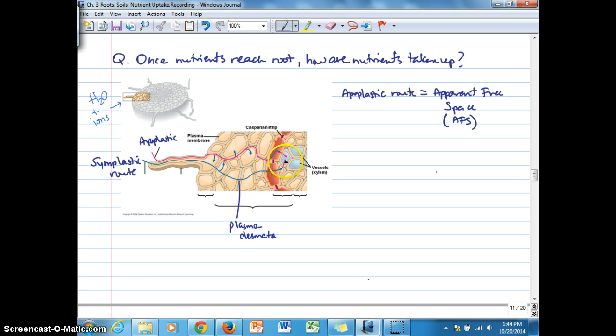When we look at that apparent free space in solution, experiments have shown where we have a beaker of water with a plant and its roots in a solution that contains a 0.2 molar solution of calcium. The plant ends up taking up calcium very quickly at a high rate initially, and then it kind of tapers off.